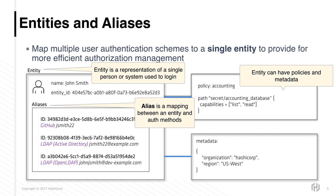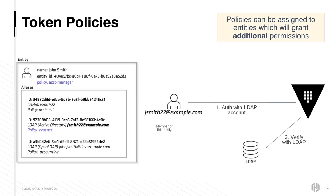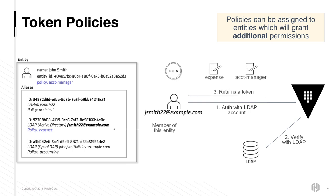Vault will automatically create an entity if one does not exist for any client gaining access to a secret within Vault. Entities can have policies assigned to them that apply to all tokens associated with that entity. Vault policies can be assigned to entities which will grant additional permissions to the token on top of the existing policies on that token. If the token presented on the API request contains an identifier for that entity, and if that entity has a set of policies on it, then the token will be capable of performing actions allowed by the policies on the entity as well.